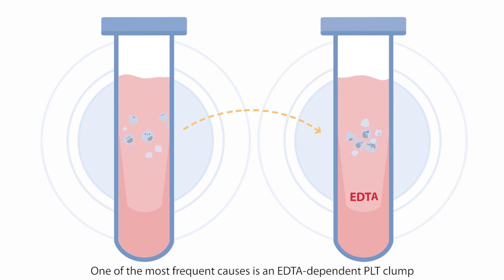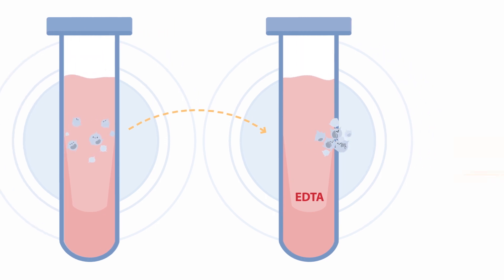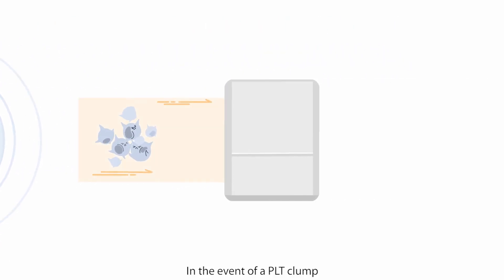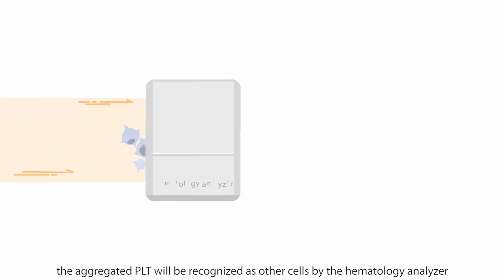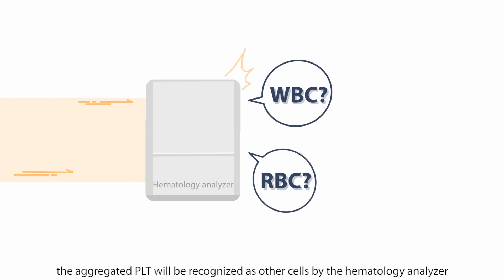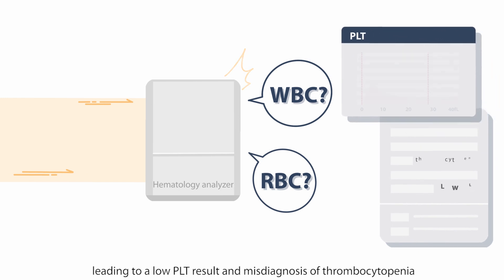One of the most frequent causes is an EDTA-dependent PLT clump. In the event of a PLT clump, the aggregated PLT will be recognized as other cells by the hematology analyzer, leading to a low PLT result and misdiagnosis of thrombocytopenia.